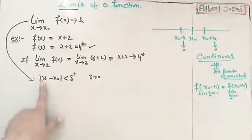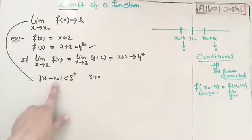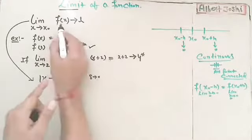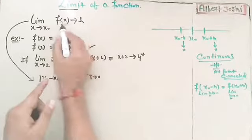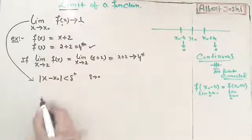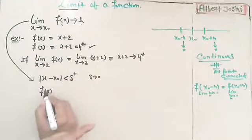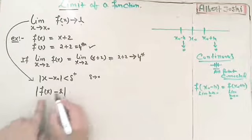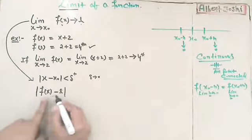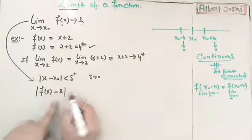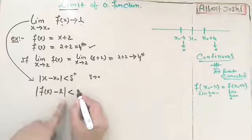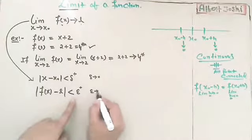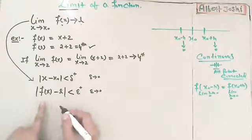So there will be a difference between this point and this point. And this function is converging to L. It means that f of x minus L — there will also be a difference, a smallest value, that is epsilon. Epsilon is also a positive value and it is converging to 0.